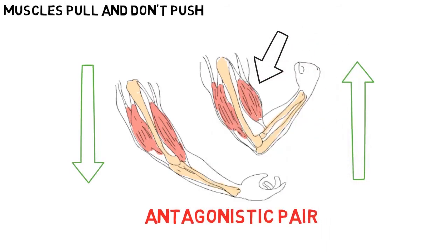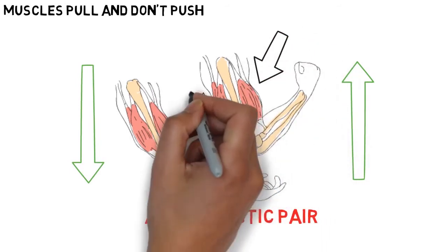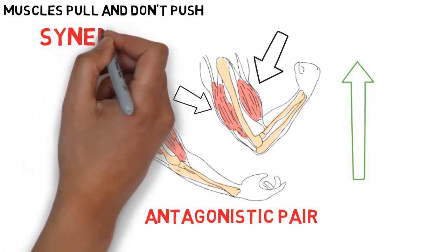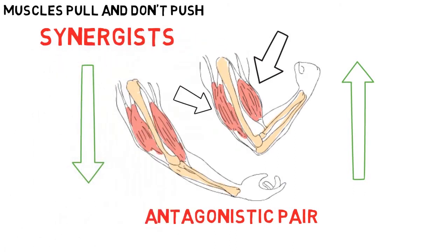One muscle will contract, shorten and pull, while the other relaxes and lengthens, or vice versa. There are also muscles called synergists that hold a stationary bone still, like the shoulder when you curl a bicep.